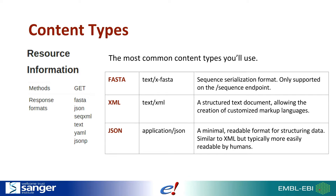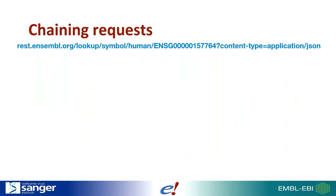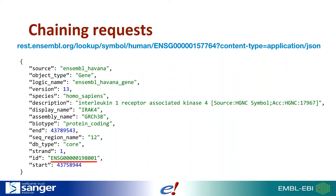The REST API supports a number of content types depending on the endpoint. A content type allows a server to send the same data using different formats depending on what the client prefers. For example, the GeneTree endpoints have content types such as PhyloXML. For most endpoints, you'll likely use JSON, as every major language has a good JSON library to handle that format. The real power of the REST API comes in extracting fields from the response to use in subsequent requests.